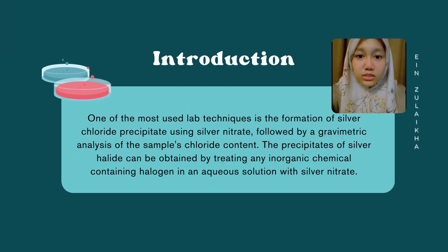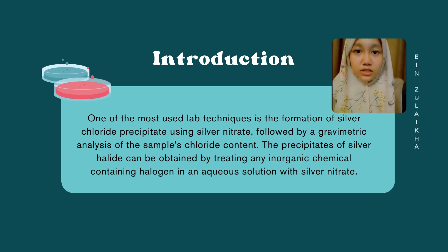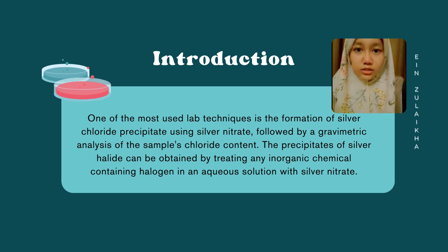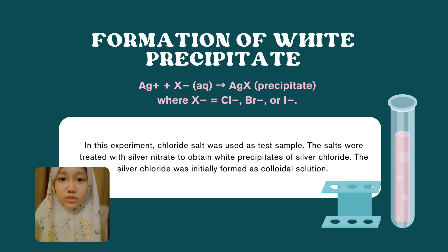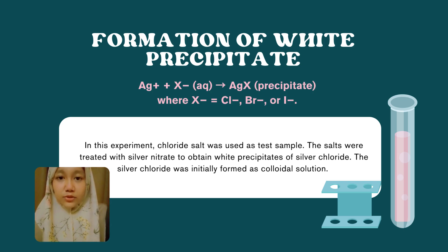One of the most common lab techniques is using gravimetric analysis by adding silver nitrate to form a precipitate of silver chloride. A precipitate of silver halide can be obtained by using an inorganic component that contains halogen with an aqueous solution. The formation of a white precipitate can be determined by using the ionic reaction, where silver ions combine with chloride ions to form silver chloride.